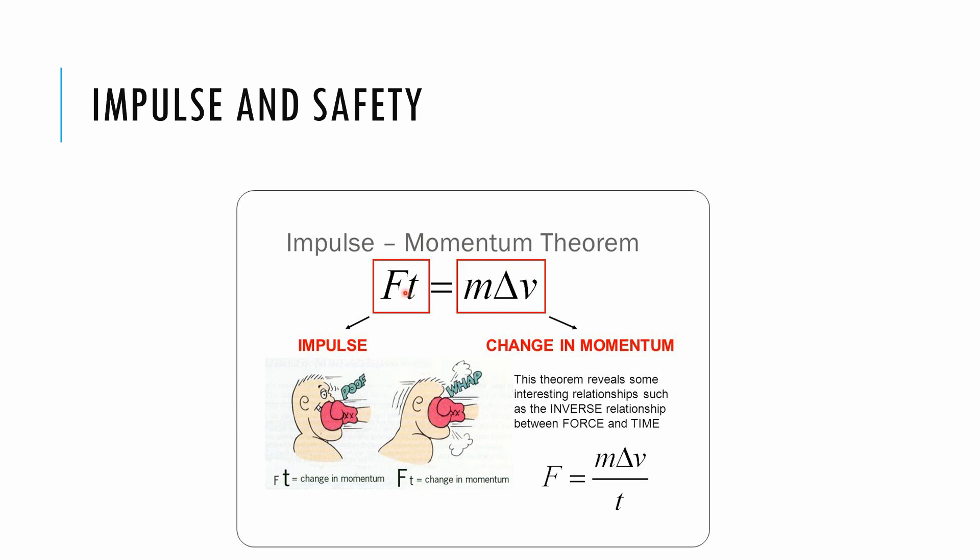This quantity, the net force times the duration of the collision, is going to equal the change in momentum one way or another. So if you have a very big time, a very long time, the force doesn't have to be so big. But if the time is short, you need a large force.